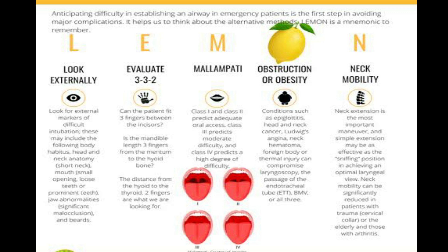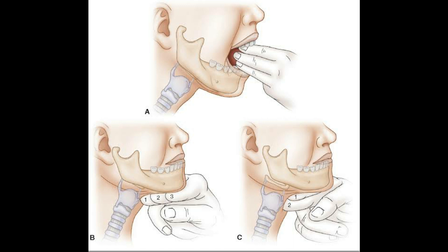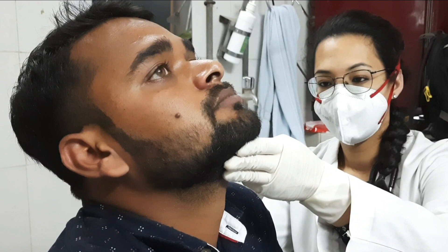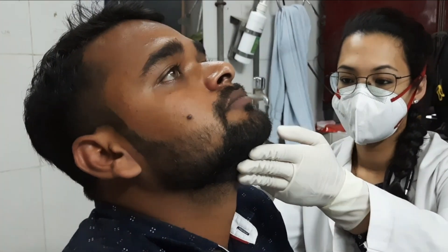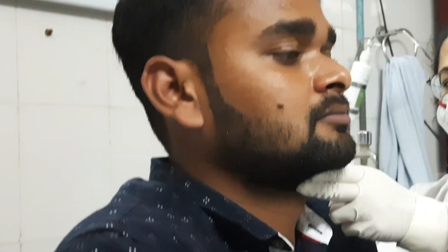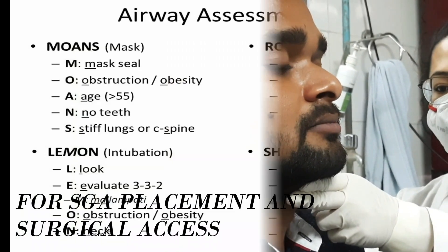Another group index is the mnemonic LEMON: L — look externally for features suggestive of potential difficulties; E — examine the airway anatomy by the 3-3-2 rule; M — Mallampati grading; O — obstruction of the airway; N — neck mobility. The 3-3-2 rule: assess oral opening by accommodating three fingers; measure mandible capacity for the tongue with three fingerbreadths between mentum and hyoid bone; and externally assess for a high larynx by fitting two fingers between the top of the thyroid cartilage and the floor of the mouth.